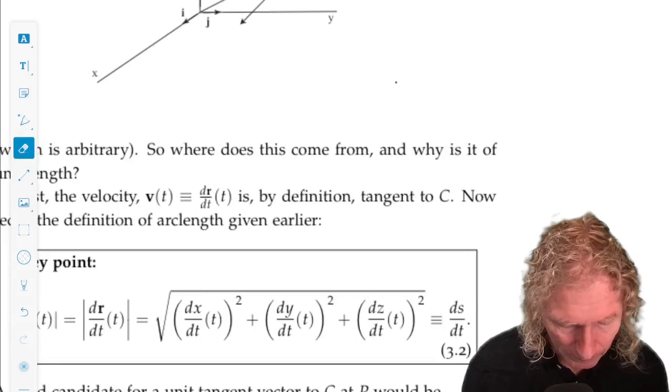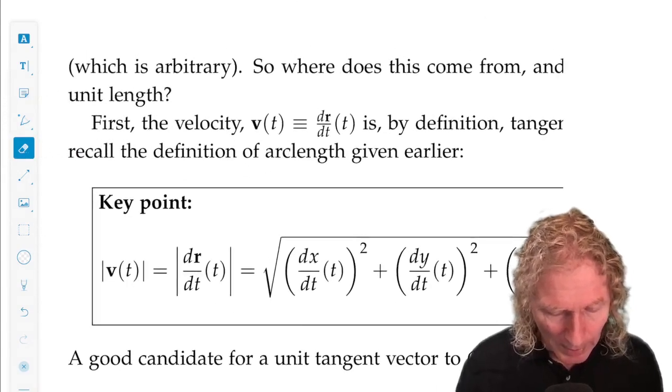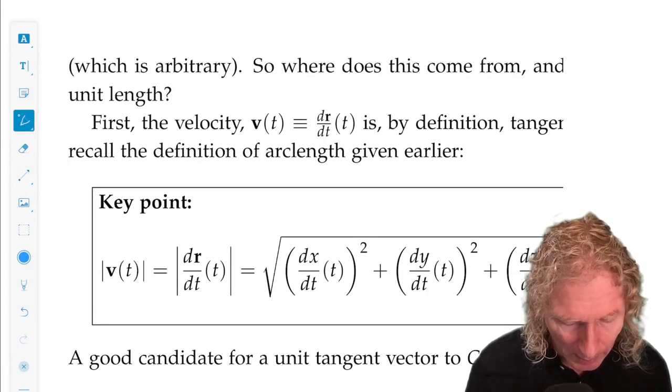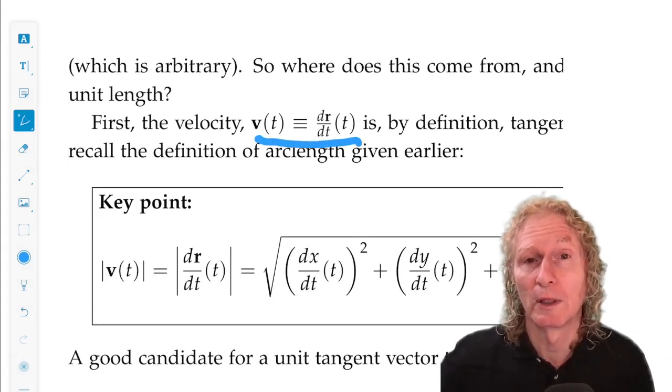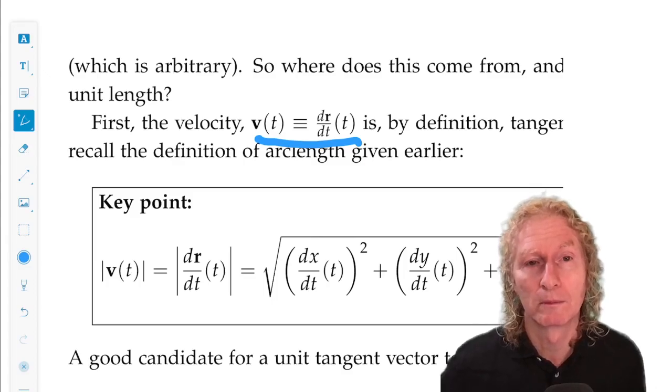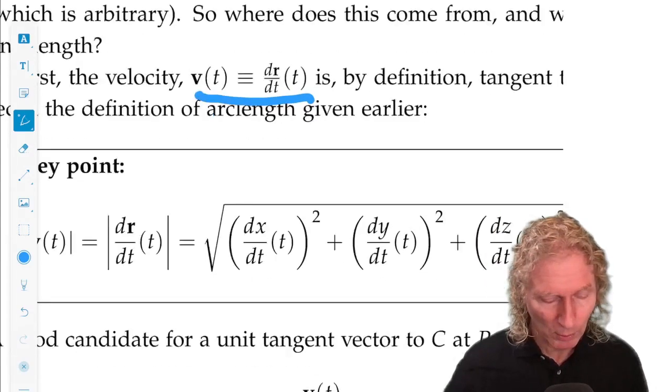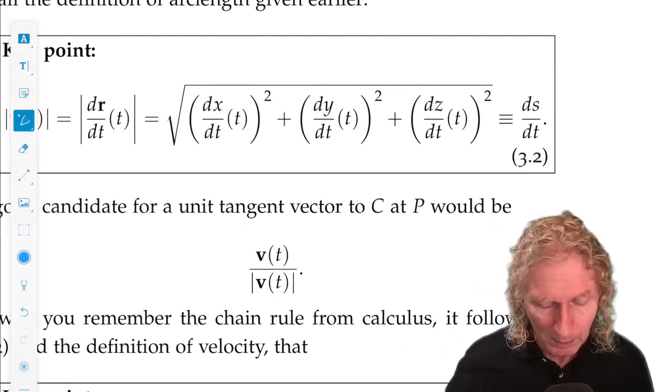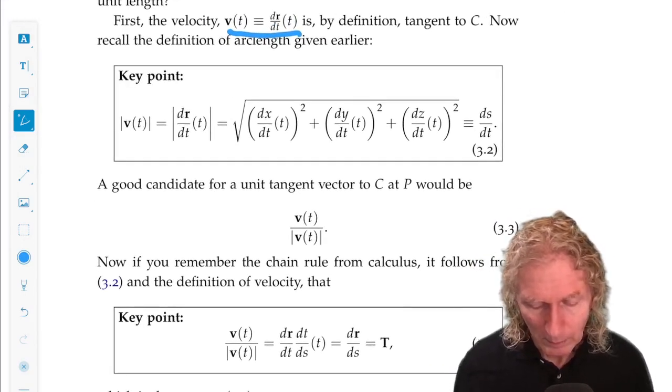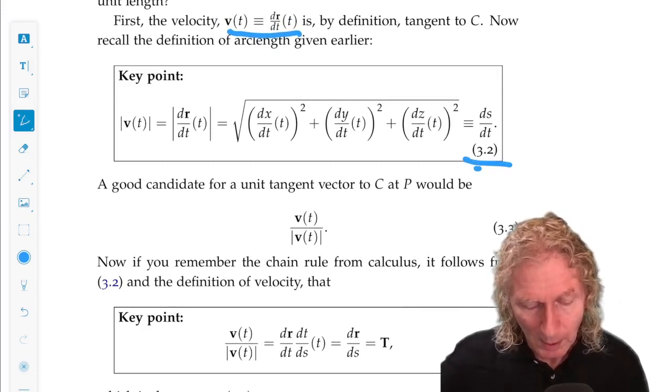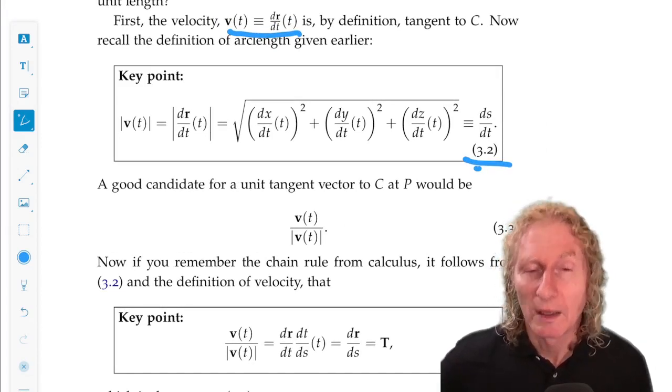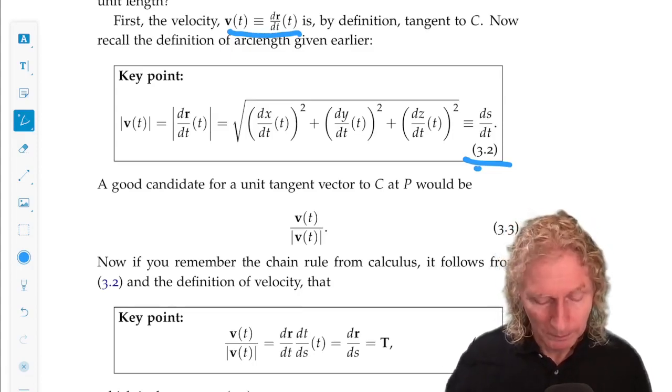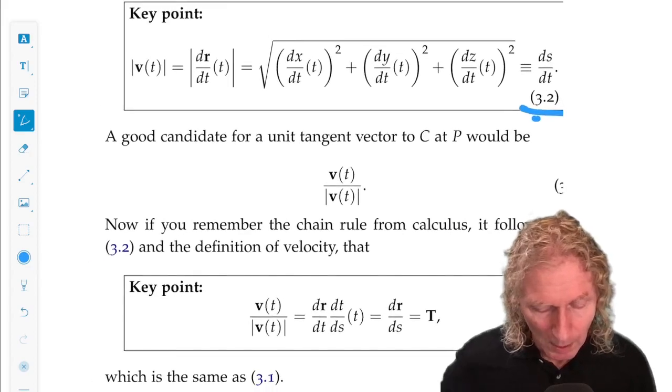Well, a more natural definition of tangent is probably the velocity vector, which is by construction tangent dr/dt. Remember that the magnitude of the velocity, equation 3.2, is defined to be ds/dt, and that's a differential equation defining the arc length.